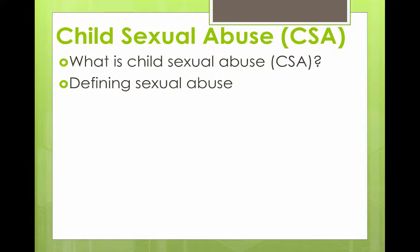No matter what the abuser tells them, children are not consenting. They're also not in a position to refuse due to the power dynamic difference between adults and children. Many children are threatened — told things like 'if you say anything I'll kill your family.' Any sort of exertion of power or control levied by the abuser against the victim is usually a clear case of CSA.